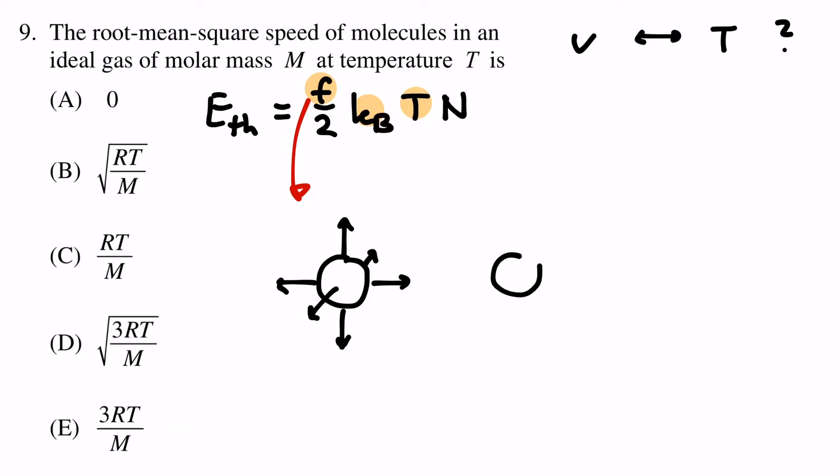Rotation is no degree of freedom, because after rotating a perfect sphere, it looks the same as if nothing had happened. And vibration? This would require some inner structure that we don't have. So we end up with F equals 3.